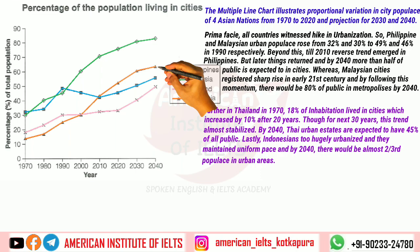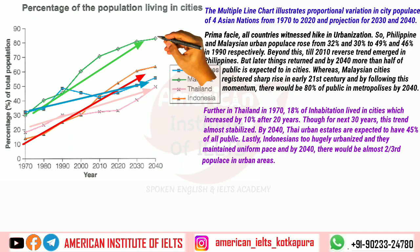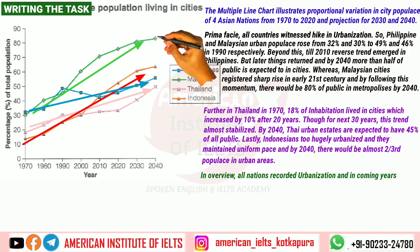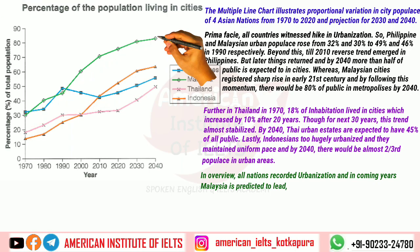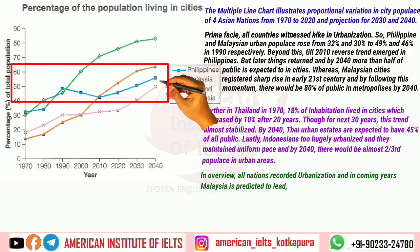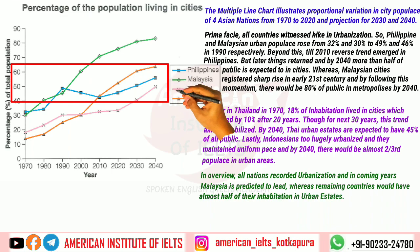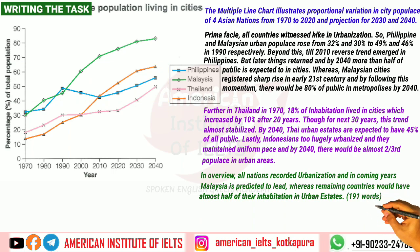Finally, in conclusion: all nations recorded urbanization and in coming years Malaysia is predicted to lead. In contrast, the remaining countries would have almost half of their population living in urban estates. With this, we have completed the task in 191 words.